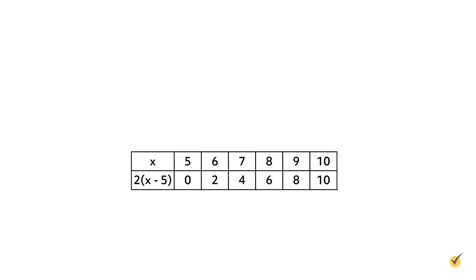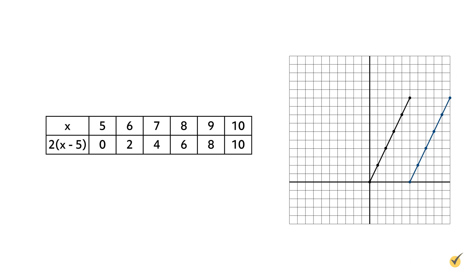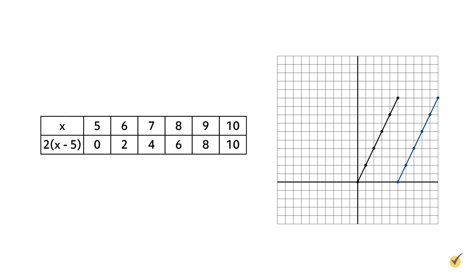Next, complete a table showing the new values for this function. Since the graph shifted 5 units to the right, the x-coordinate of the origin point increased by 5, so the first set of values is 5,0. The ordered pairs are: 5,0; 6,2; 7,4; 8,6; 9,8; and 10,10. In the graph, the original function f(x) equals 2x is graphed in black, and the new function f(x) equals 2 times x minus 5 is graphed in blue. The x-axis represents values for x and the y-axis represents values for 2 times x minus 5.